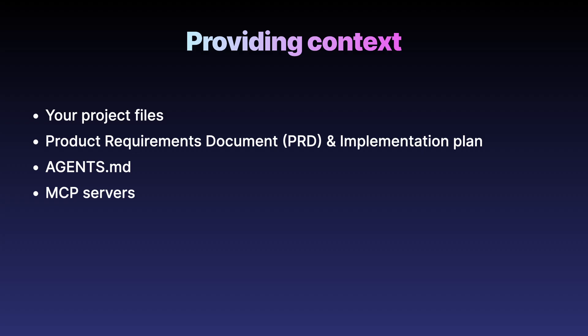But how do we provide context? There are a couple of ways. First, the agent will look through some of our project files to learn about what we are building. Second, you can provide a product requirements document, or PRD, together with an implementation plan. Third, you can provide an agents.md file which contains initial instructions and rules provided to the agent. And then there are MCP servers — model context protocol servers — which can provide additional context.